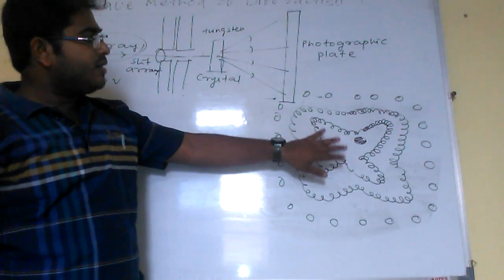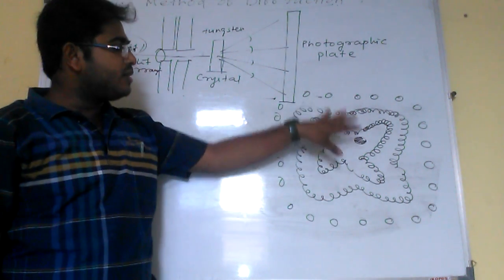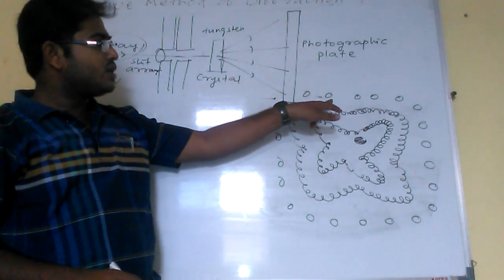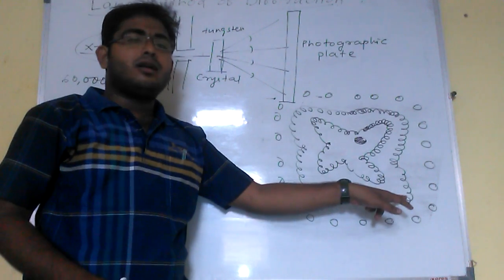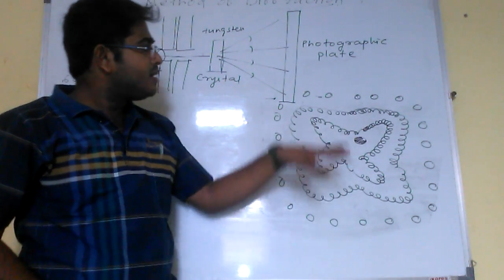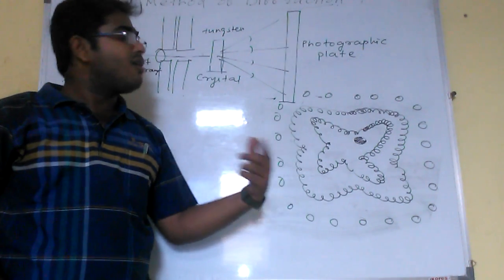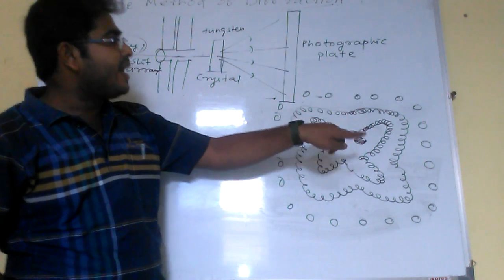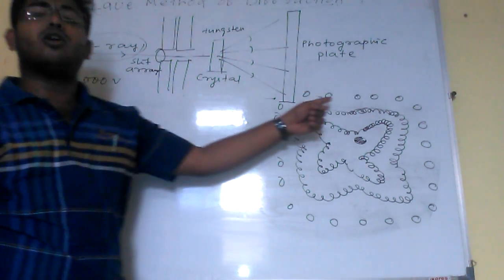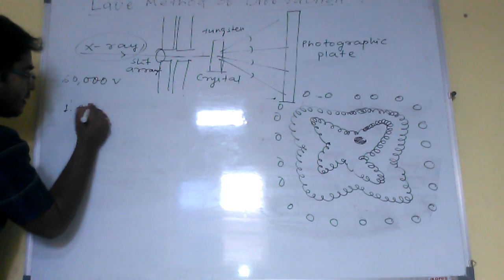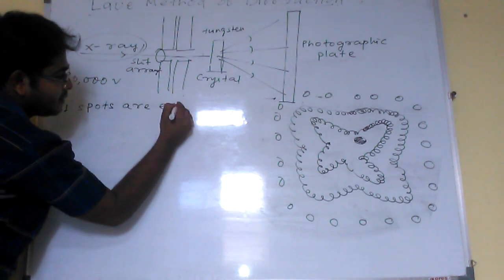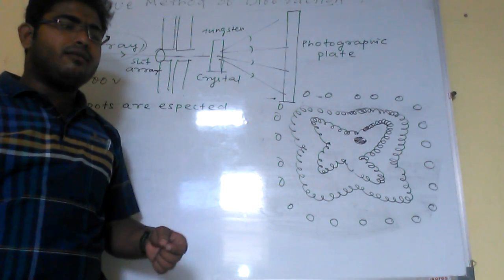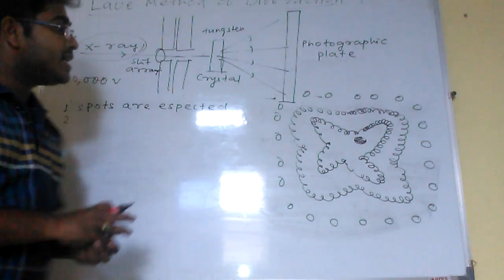When such a diffraction pattern is observed, from this pattern we can draw some conclusions. The first conclusion is that the spots obtained in the Laue method are quite as expected — that is, using the reflection law, where the spots were expected to fall is exactly where the Laue method gives the spots. Using the normal diffraction method we used to have a single spot, but here we are getting a series of spots.